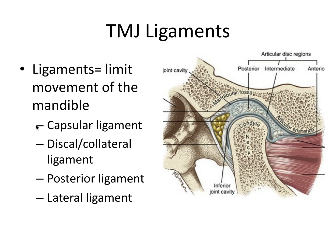The four key ligaments are: the capsular ligament, which completely covers the TMJ joint space — you'd need to puncture this to access the superior joint space. The discal or collateral ligament attaches to the medial and lateral poles of the condyle, like a bucket handle, keeping the disc attached during movement. The posterior ligament goes from the articular disc to the back of the condyle to prevent anterior disc displacement. The lateral ligament wraps around the condyle to prevent posterior disc displacement.